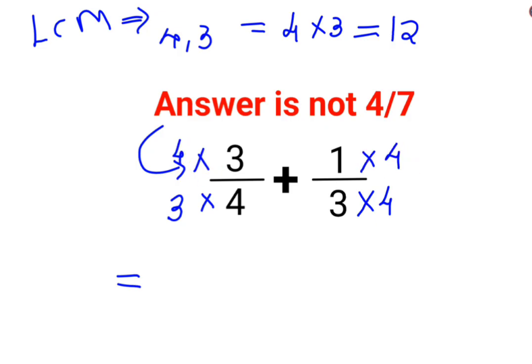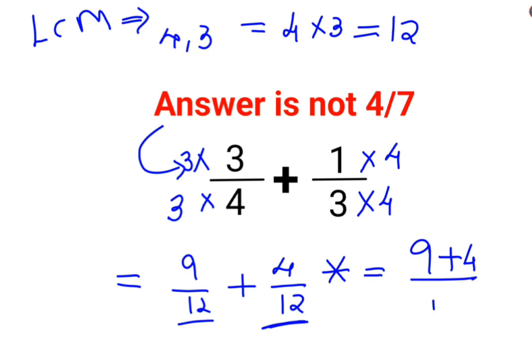So we have 3 multiplied by 3, that is 9 by 12, plus 1 into 4, that is 4 by 12, or 4 upon 12. Now, whenever you have the same denominator, only then can you directly add the numerator, which is 9 plus 4 upon 12.